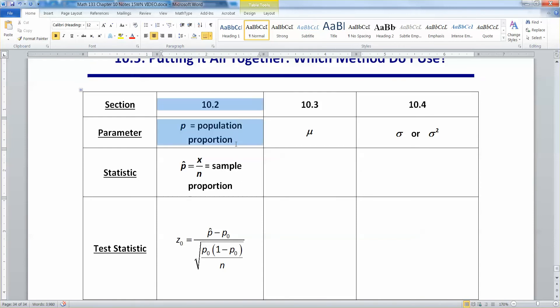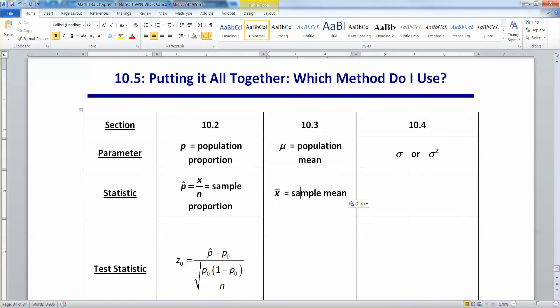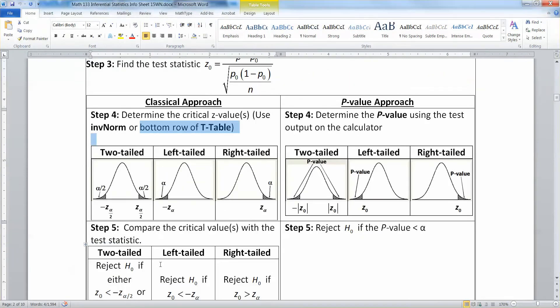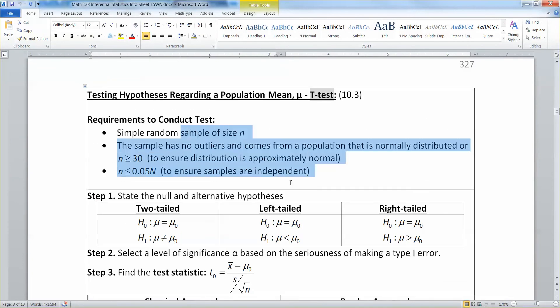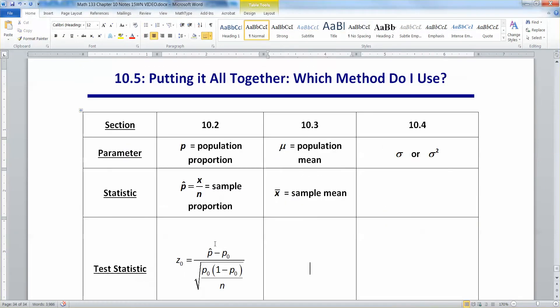All right, so that was section 10-2, proportions. In general, if it feels like the problem's not giving you a lot of information, that tends to be the proportion ones. Just a little side note to you. Okay, then we did a test in 10-3 for the population mean. Right, we all know that μ is population mean. All right, that's great. Now, the statistic that we use to test that population mean is x-bar. So we assume some population mean is true, and then we're going to use the statistic from a sample to test it.